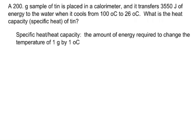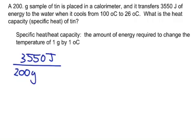I don't know what specific heat is. It is energy, 3,550 joules, so energy divided by mass. So that was joules lost by the tin, the mass of the tin was 200 grams, and divided by temperature change, which the temperature change of that water was 100 minus 26, or it dropped 74 degrees Celsius.